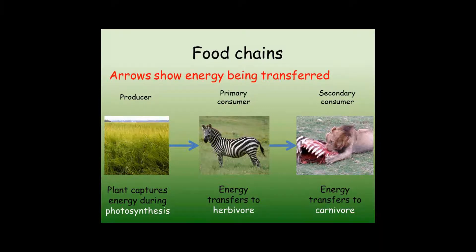It is very unusual for food chains to be more than three or four species long. This is because at each stage, only a small fraction — somewhere around about 10% of the energy — is passed on each time to the next species along the chain. For example, only 10% of the energy consumed by a herbivore is passed on to a carnivore when it is eaten.